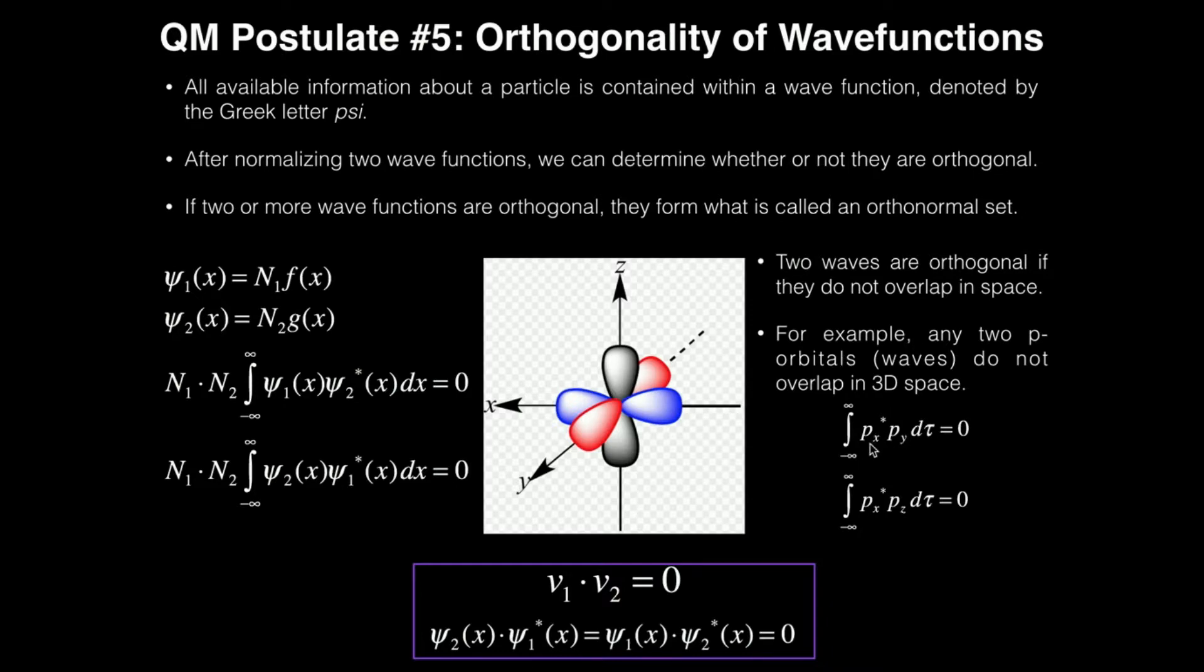So, for example, if you knew what the wave function is for the px orbital and you knew what it was for the py orbital, if you did this same concept, now you'd have to have the normalization constants, but that's not the point, if you integrated from negative to positive infinity for px*, let's say, py*, again, the star doesn't matter, one of them just has to be the complex conjugate, and you integrated over all space, you would get zero.